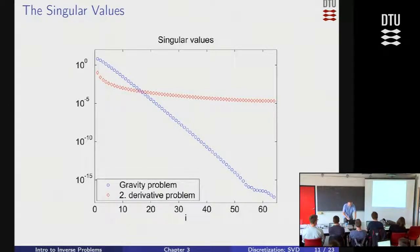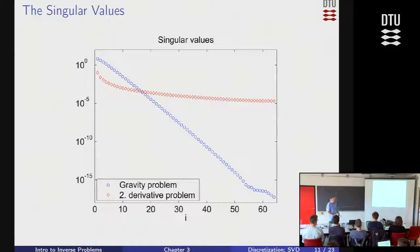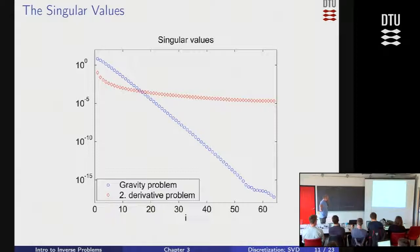Something funny happens towards the end. In theory, if you could compute in infinite precision, they would just keep decaying. But what you see here is the influence of rounding errors — you hit the limit of what you can compute on the computer. This matrix is certainly very, very ill-conditioned, because the condition number is the ratio between the largest and smallest singular value, and that's something like 10^18. So that's a humongous condition number — basically infinite.